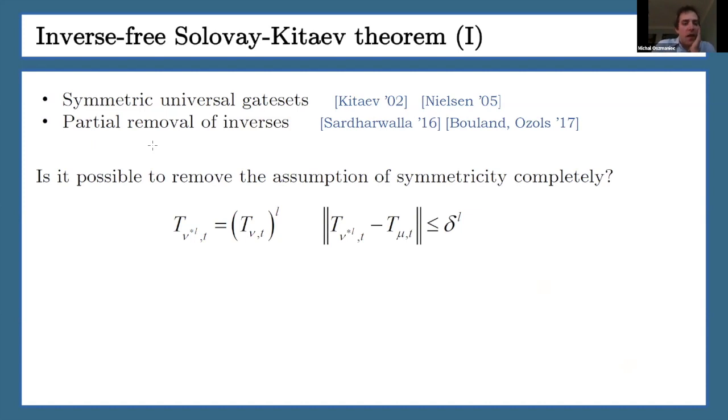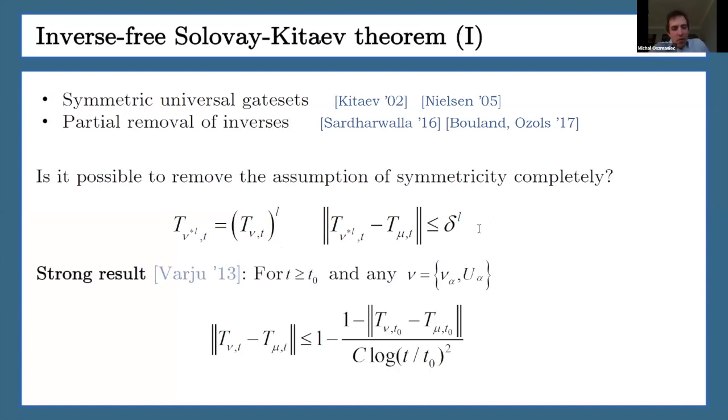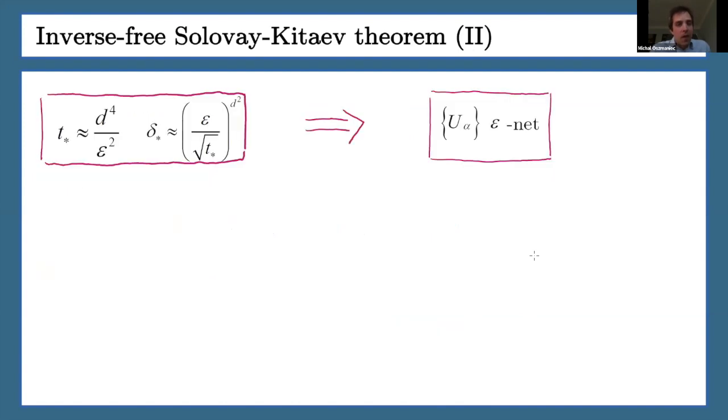I'm going to use two properties of those moment operators. First, when I take the convolution of my measure L times, that corresponds to taking the T to the power L. Also this tensor norm expands exponentially in L. And now I'm going to employ some very strong results by Verbitsky from few years back that says that essentially the spectral gap of this moment operator doesn't decay too fast. It can decay only logarithmically with T for any measure supported on symmetric gate set or not.